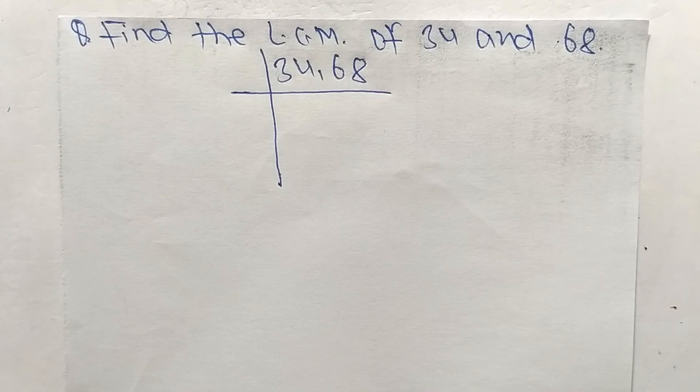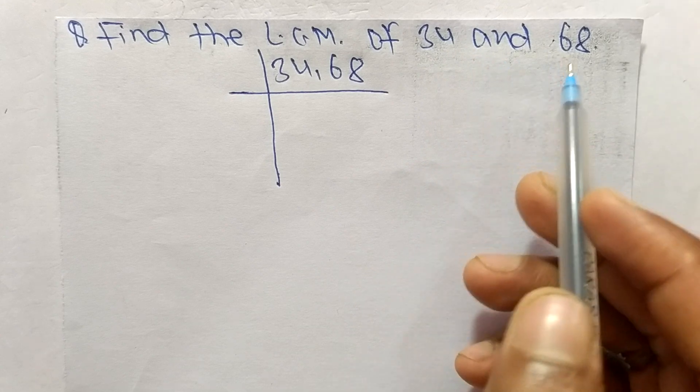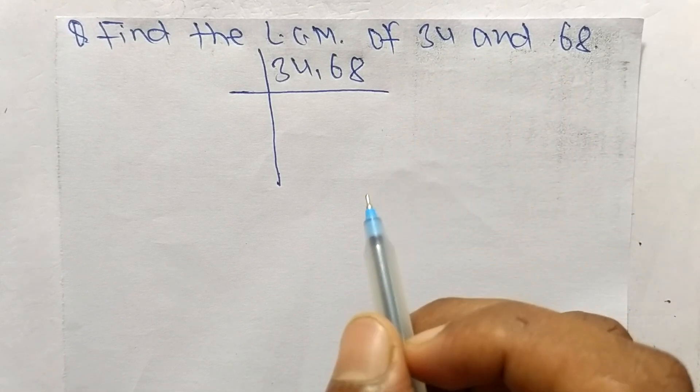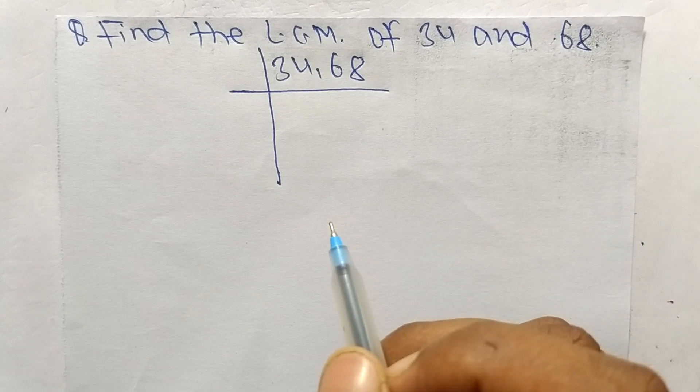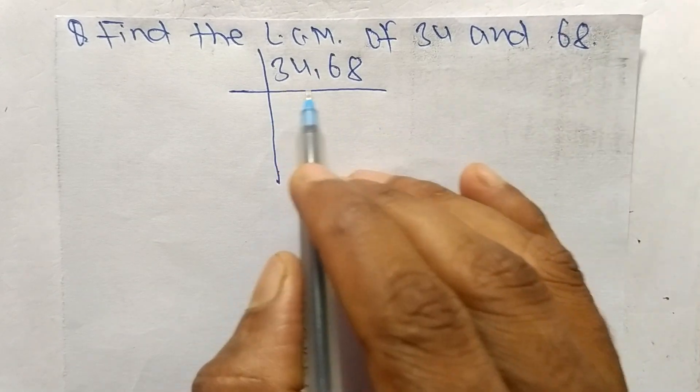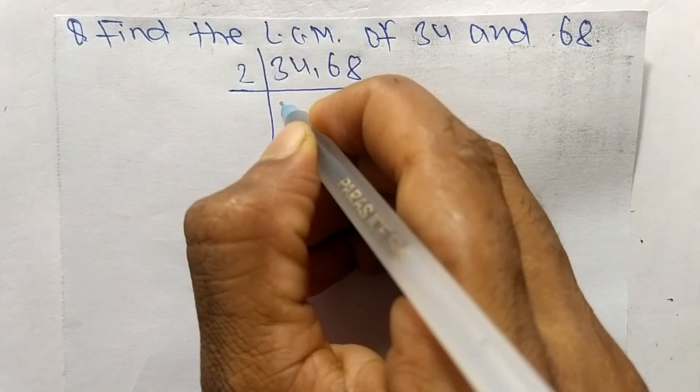Today in this video we shall learn to find the LCM of 34 and 68. To find LCM, first we choose the lowest number that can exactly divide 34 and 68. The number is 2.